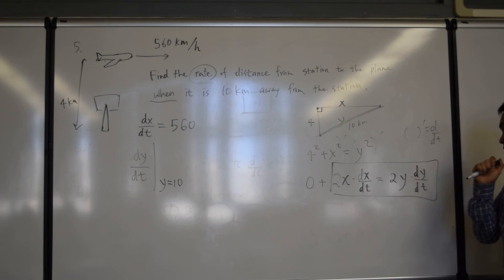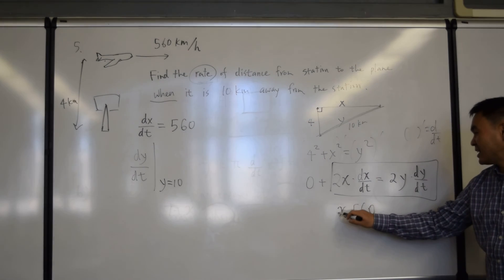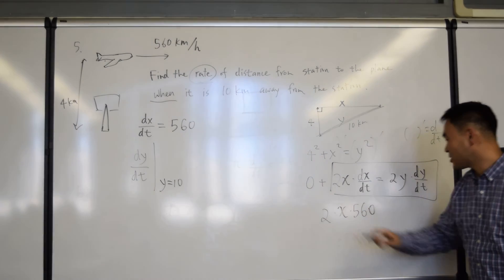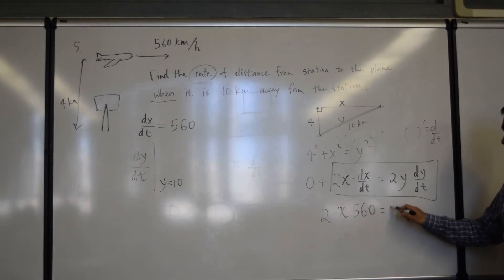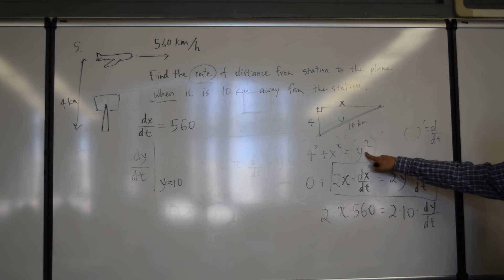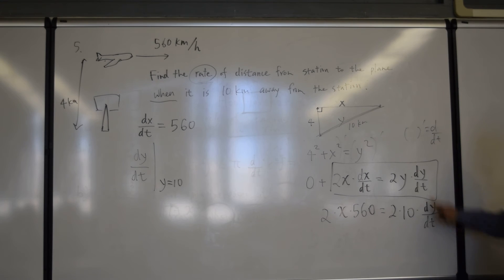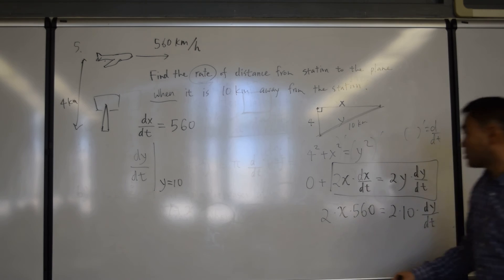And then what should we do? Now plug it in, right? So, dx dt is 560. x is what? That's not good. So, let's leave it and then think about it later. y is 10. Now we can plug it in because we differentiate. Only after differentiating, we can plug this value in. dy dt is what we are trying to find. So, that's okay. This is not okay. What should we do with x? You can do the Pythagorean theorem. When y is 10, this value is also determined, right? So, if you're looking for dy dt when y is 10, that will certainly give you an x value. Okay, so let's try that.